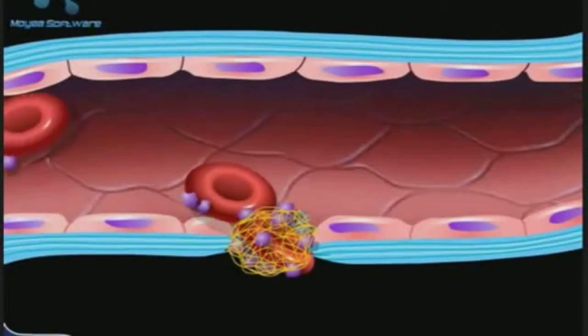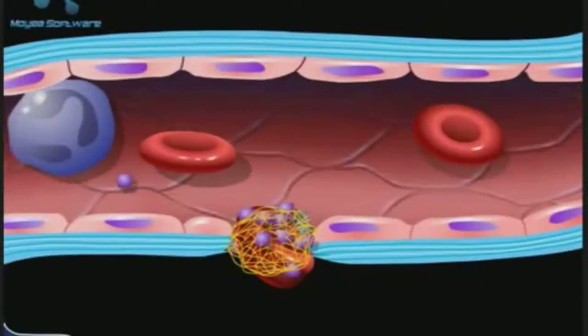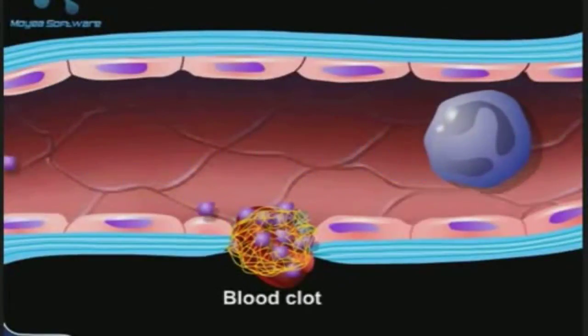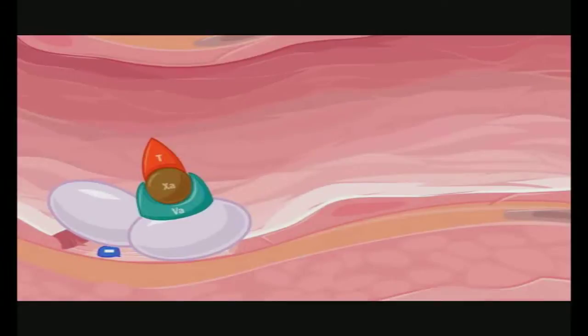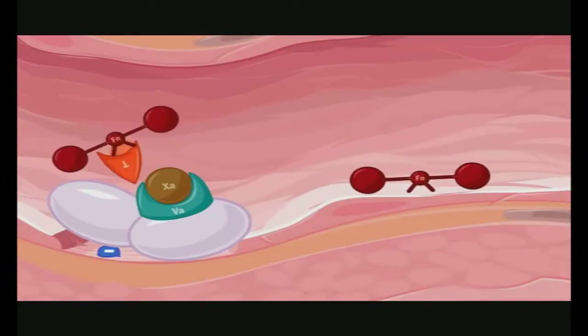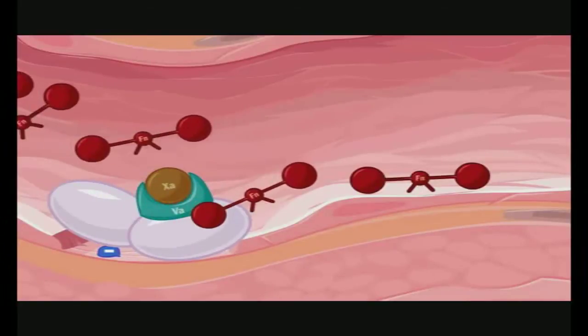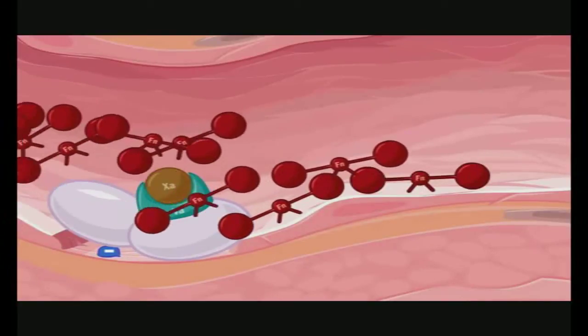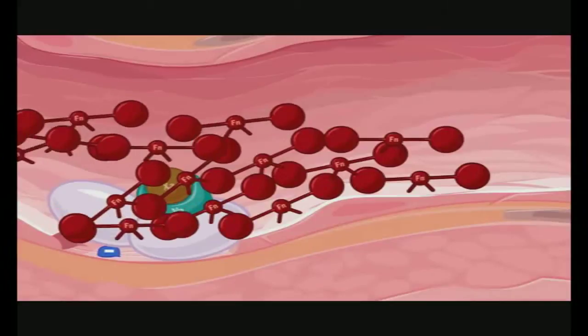Platelets and red blood cells become caught in this mesh of fiber, thus forming a thrombus. Thrombin cleaves activation peptides from fibrinogen to form soluble fibrin monomers. These subsequently polymerize to form an insoluble, loose fibrin clot at the site of the injury.